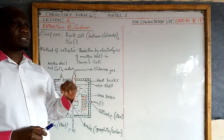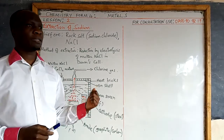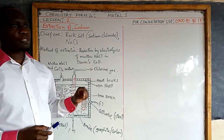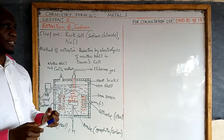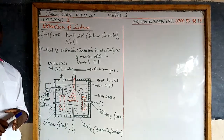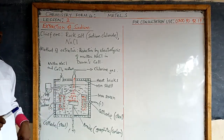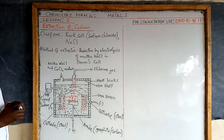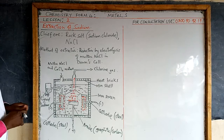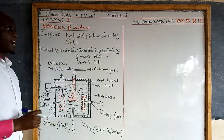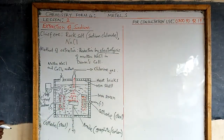So all the metals we have listed — those that are above carbon in the reactivity series — that is potassium, sodium, calcium, magnesium, aluminium — those are not extracted by reduction with carbon, but they are extracted by electrolysis. The reason being they are above carbon in the reactivity series.